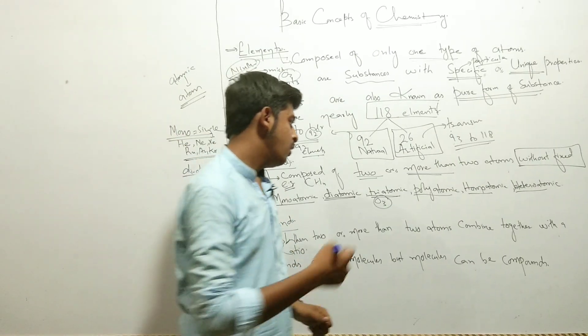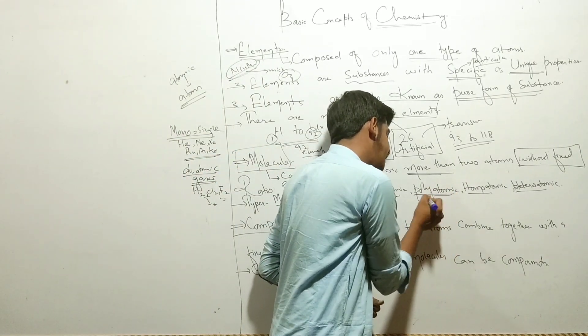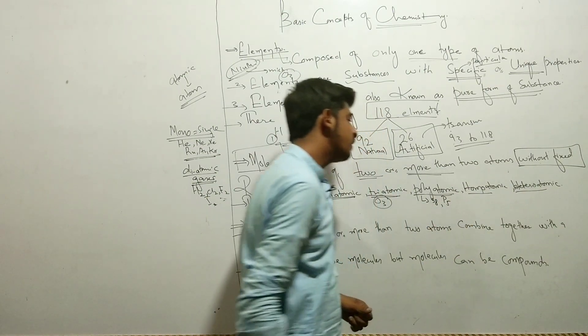Polyatomic molecules are composed of many atoms, like sulfur and pentaphosphate.